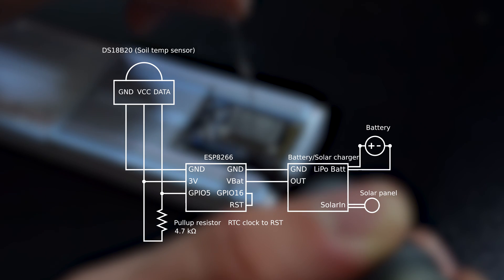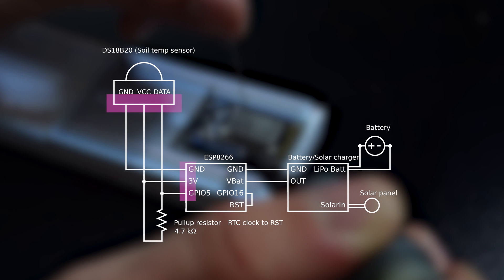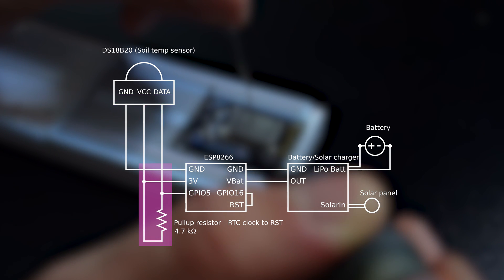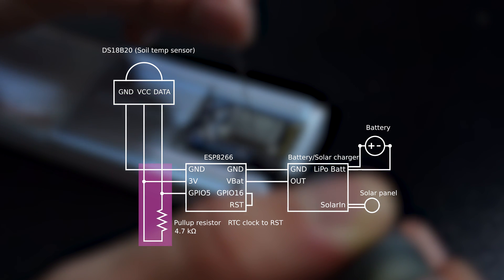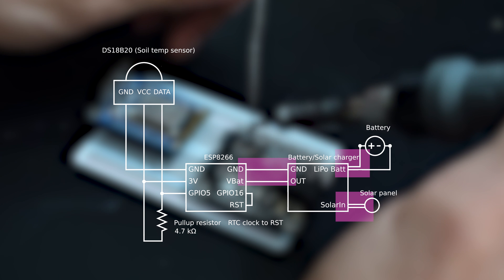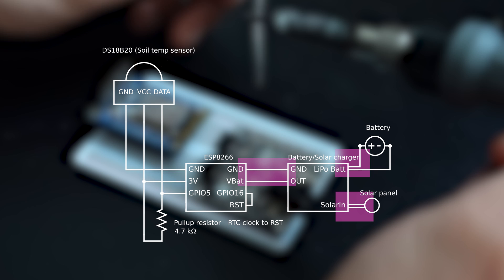The circuit design is pretty simple. The DS18B20 is connected to the ESP with ground, the 3.3 volt, and the GPIO 5 pin, which is also pulled up using a 4.7 kilo ohm resistor. The solar panel and the battery are connected to the solar charger, which is connected to the ESP — this is nice because the solar charger handles all the interactions between these three components.